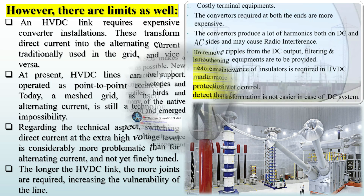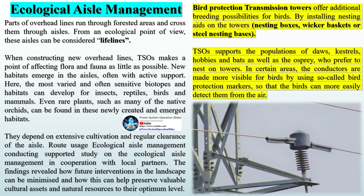Parts of overhead lines run through forested areas and cross them through aisles. From an ecological point of view, these aisles can be considered lifelines. When constructing new overhead lines, TSOs make a point of affecting flora and fauna as little as possible. New habitats emerge in the aisles, often with active support. Here, the most varied and often sensitive biotopes and habitats can develop for insects, reptiles, birds, and mammals. Even rare plants, such as many of the native orchids, can be found in these newly created habitats.